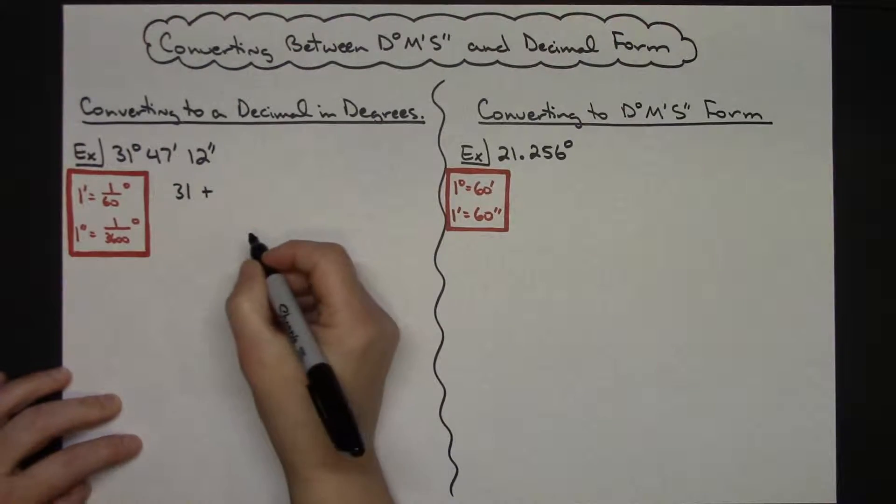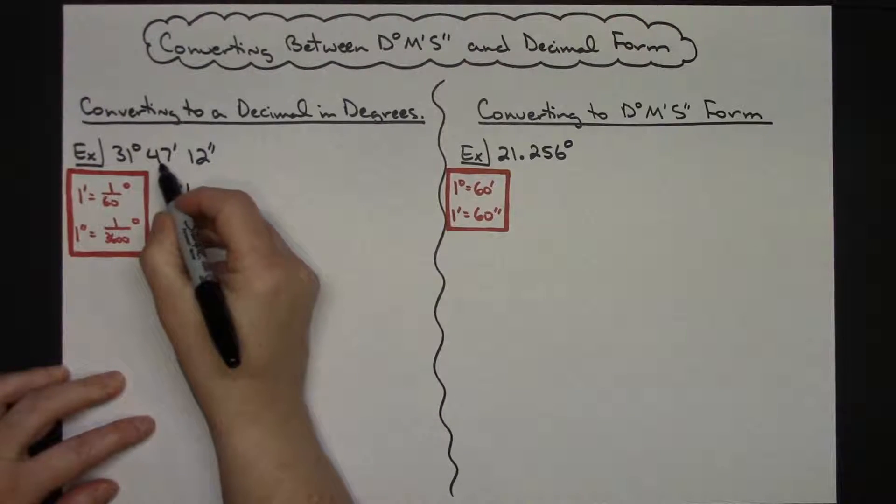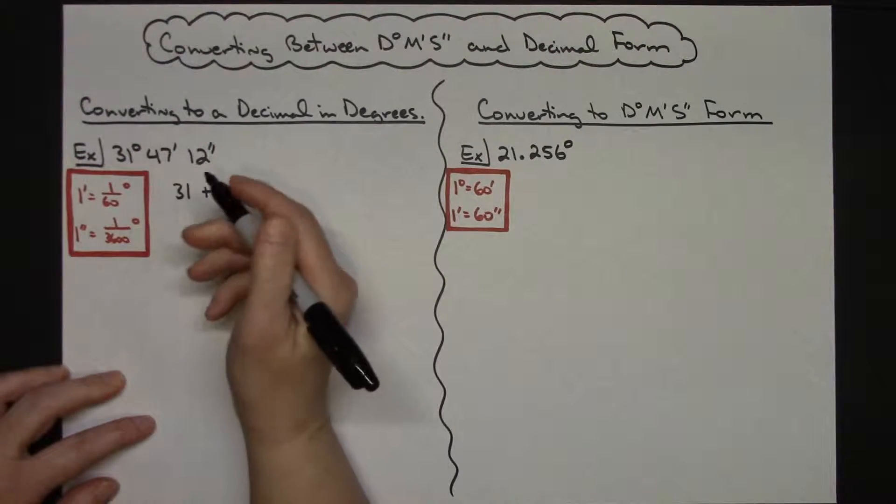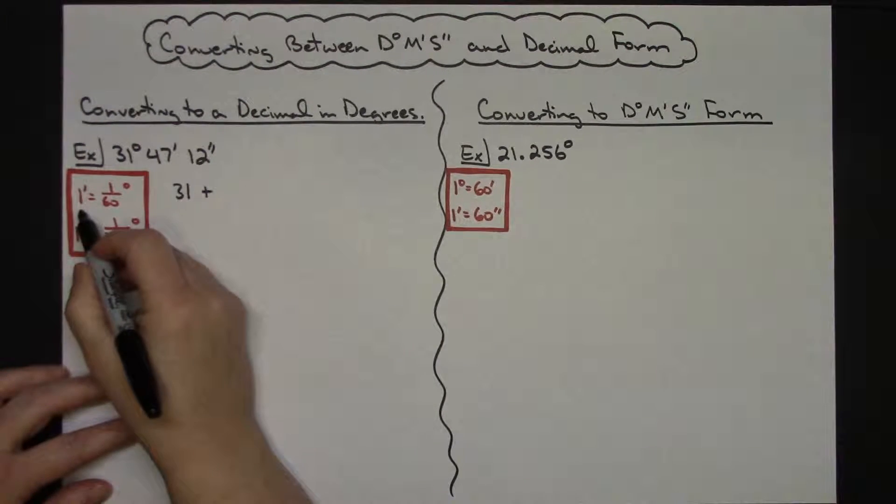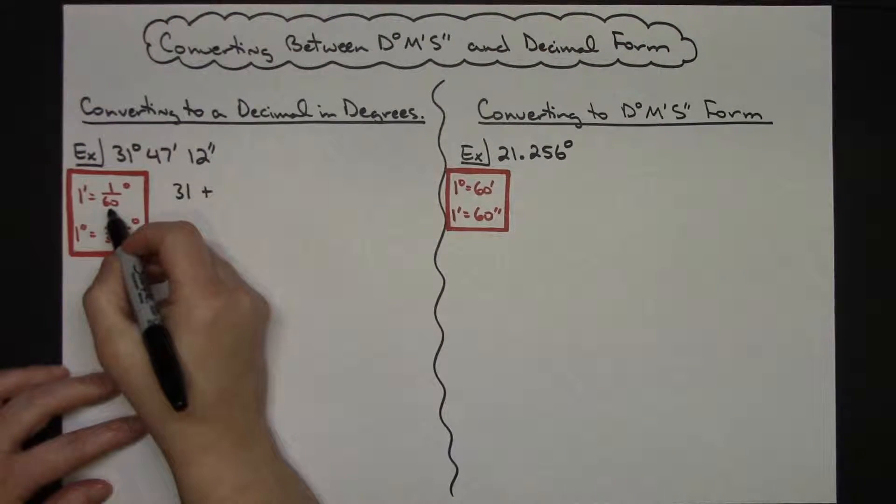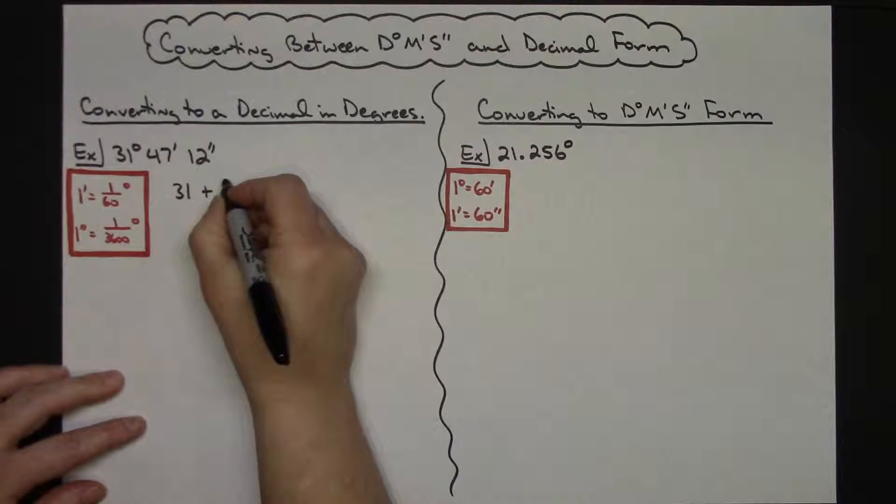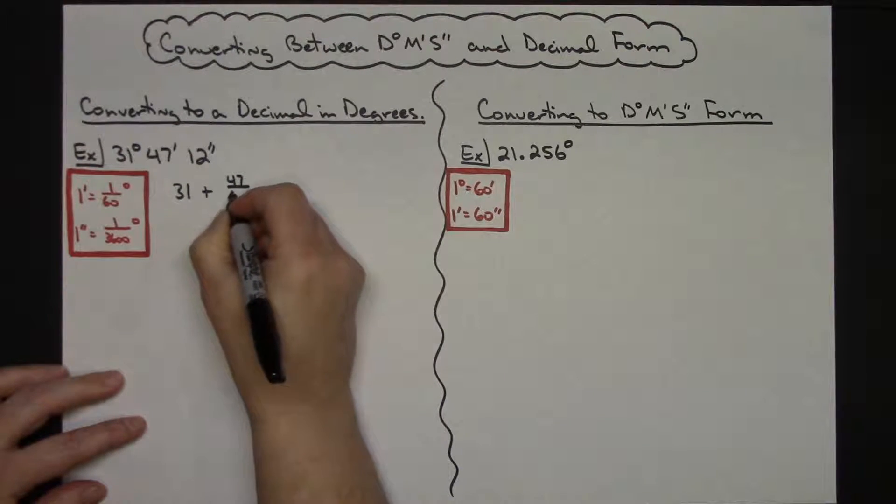But I am going to have to add whatever the 47 minutes is, converting it into a decimal. So because 1 minute is 1/60th of a degree, I'm going to do 47 over 60.